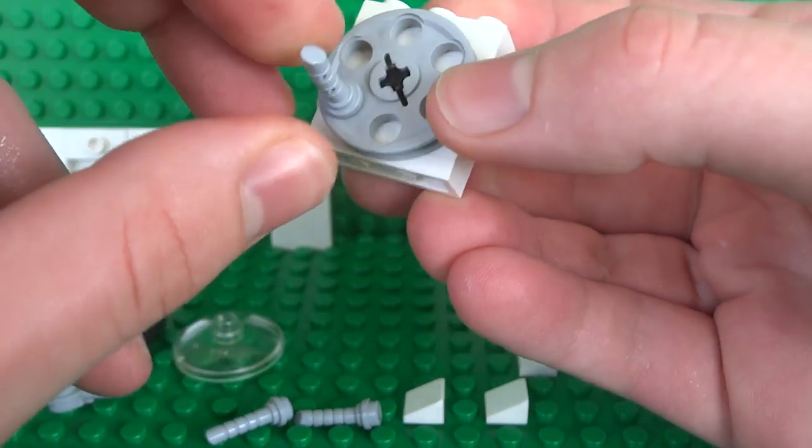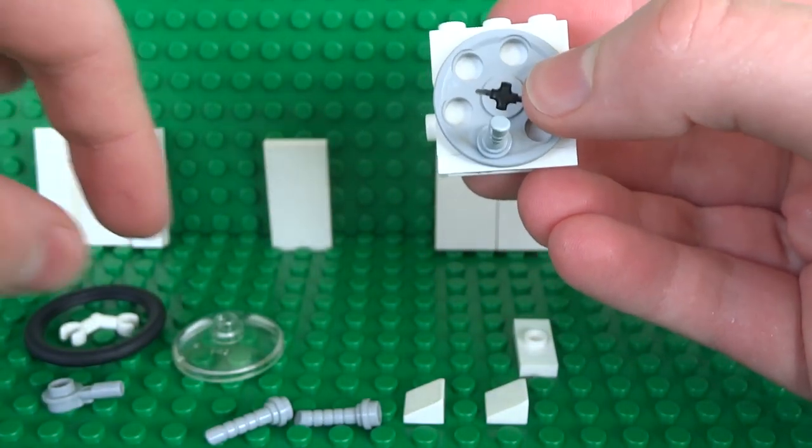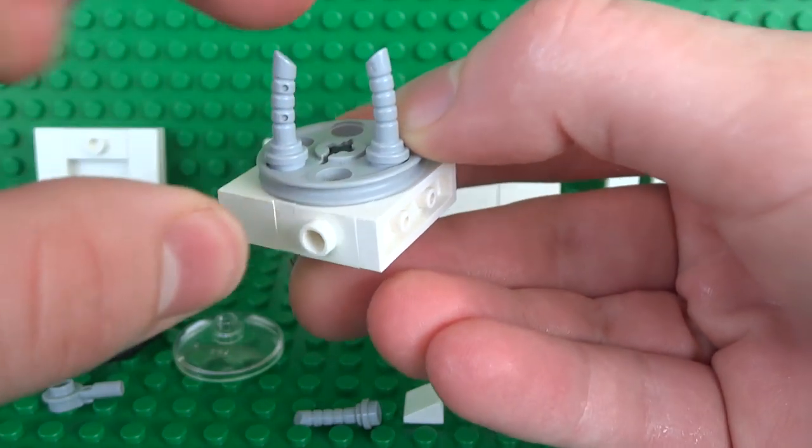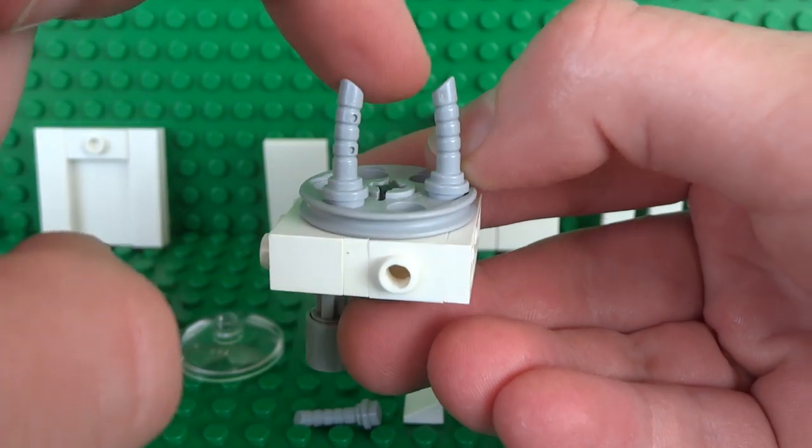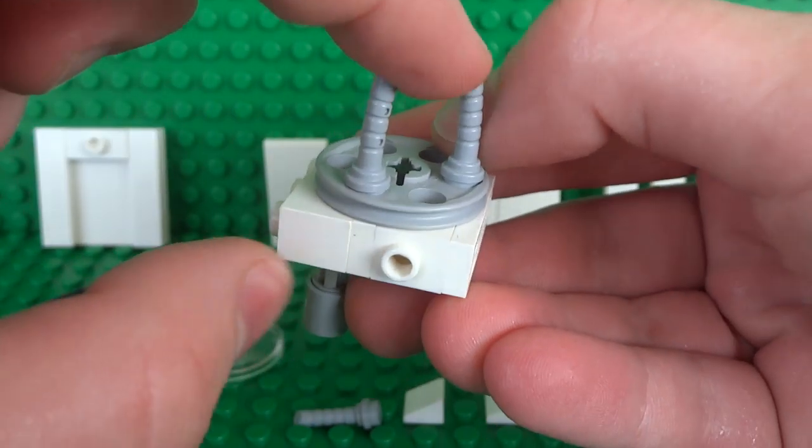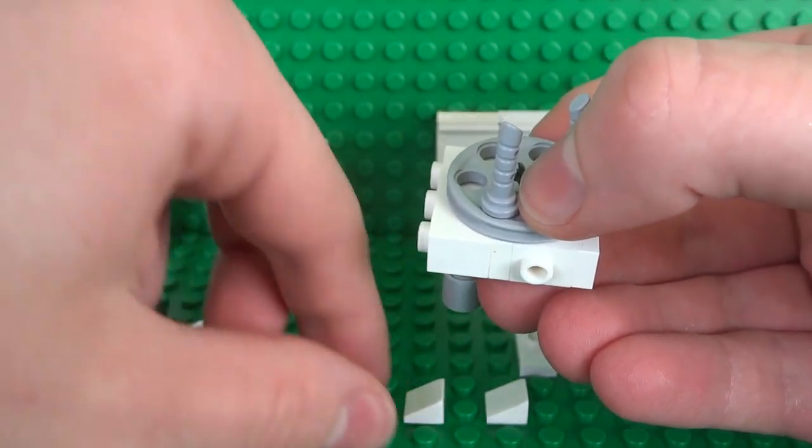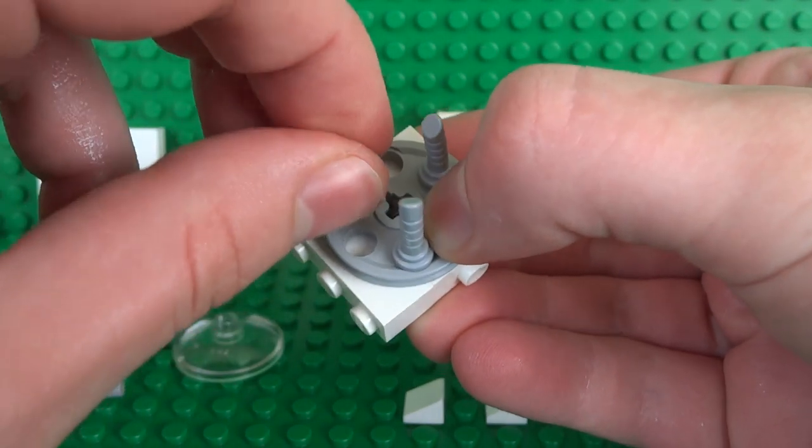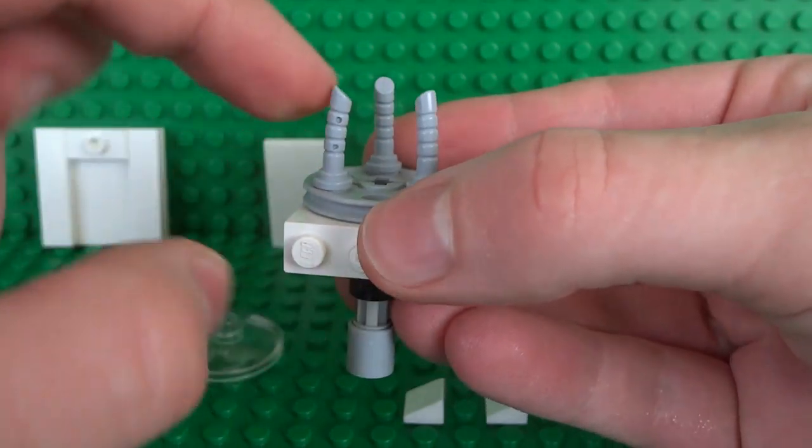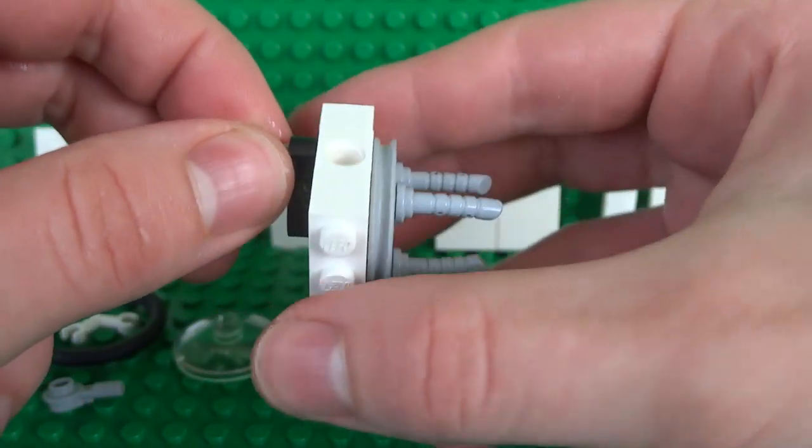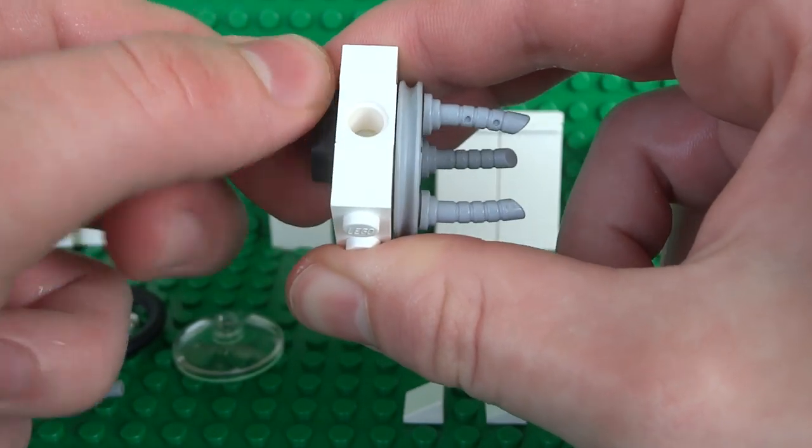So all you're gonna need to do for this is attach these lightsaber hilt pieces. It's very important that you see these lightsabers have an angled bit. Now that angled bit actually faces into the center of this Technic pulley. And just do that for all three of the lightsaber hilts. So each angled part faces downwards. And that will help provide the spacing for each of those pieces.